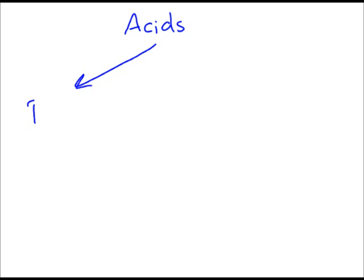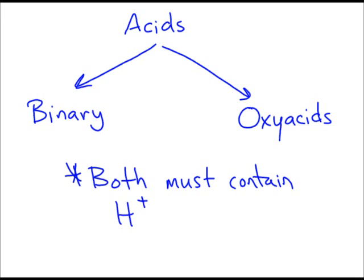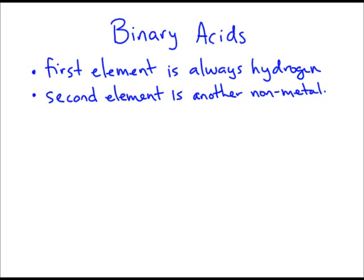Acids can be what we call binary acids, or acids can be oxyacids. Both are considered acids because they contain hydrogen in the form of H+. Binary acids - when we look at binary acids, binary really means we're working with two different elements. In this case, the first element always has to be hydrogen. The second element will then be some other non-metal.